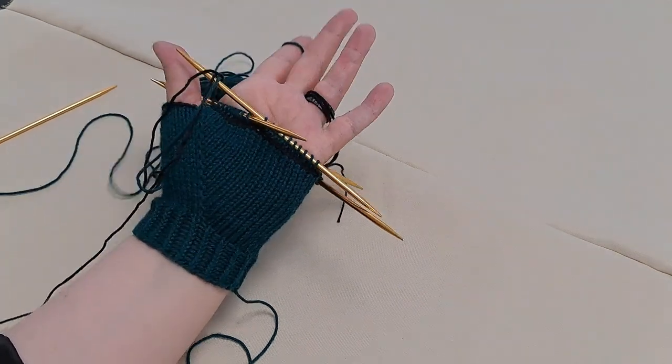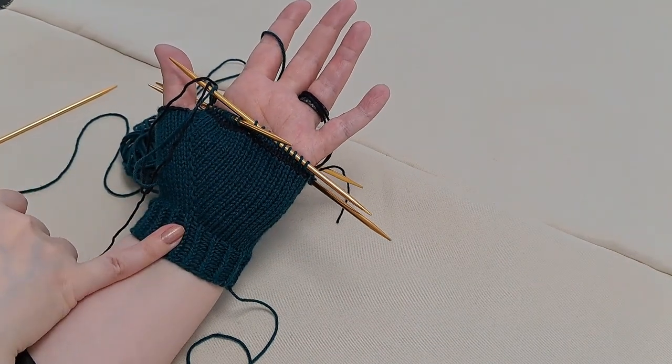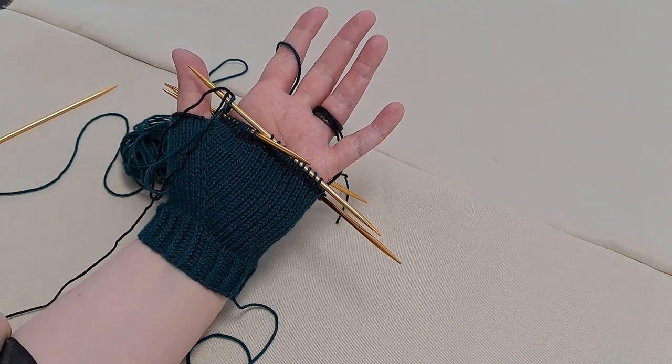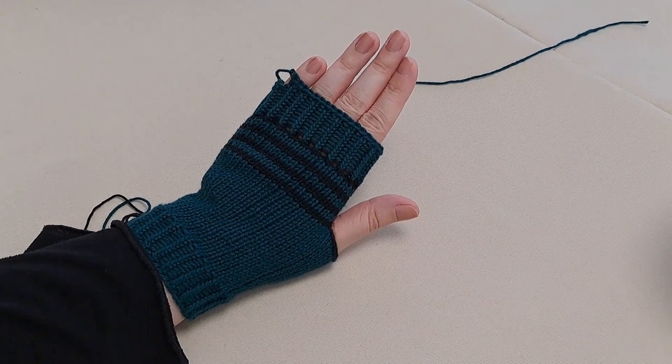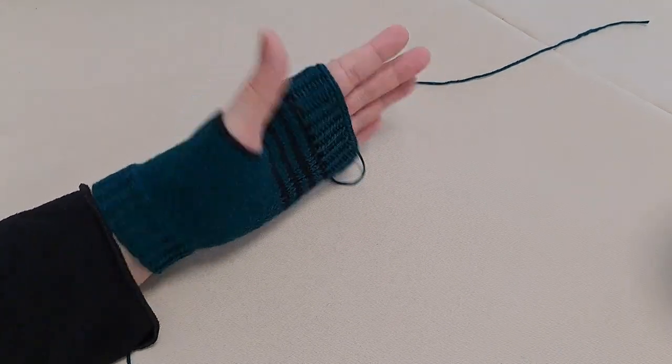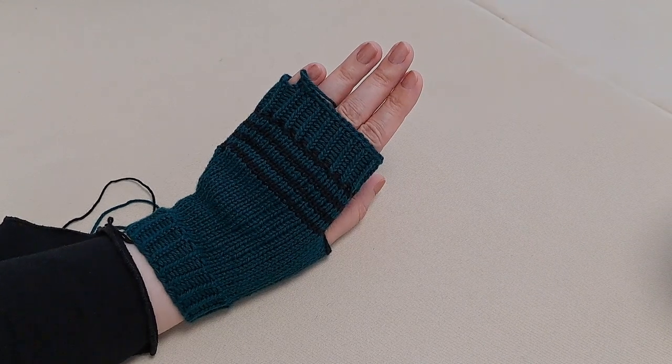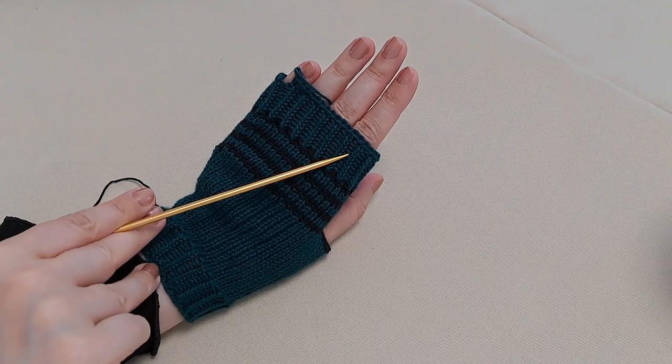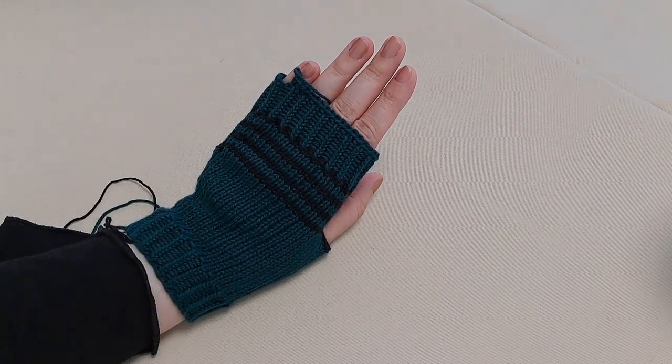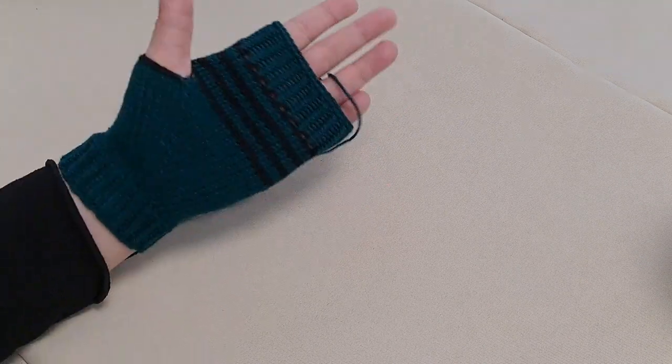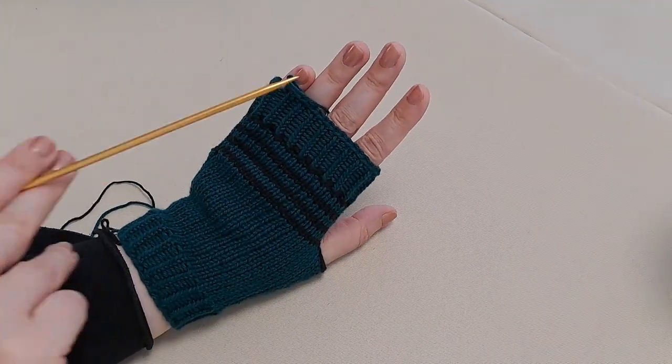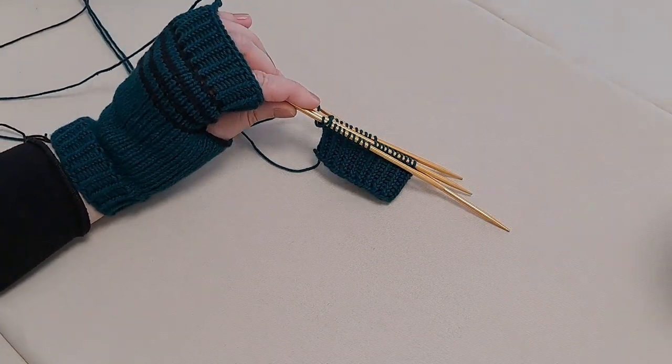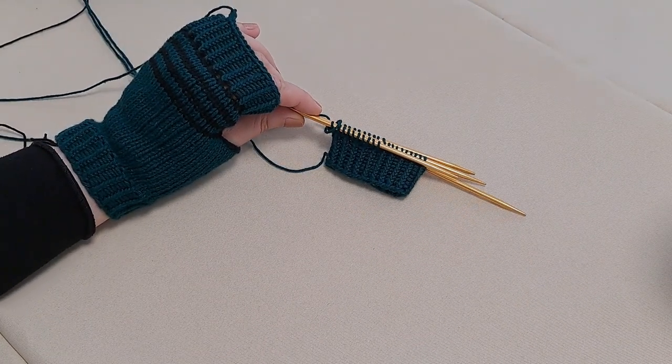And then I'm going to work 10 rounds of twisted rib in black cotton. I will see you when my glove is finished. One glove done, time to make the other one. I changed my plans a little bit. I made the ribbing here green instead of black because I had enough yarn left so I think that looks nicer. So now let's make the other glove.